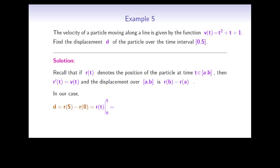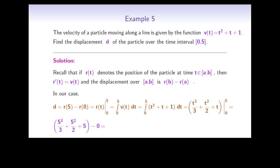This difference can be written using the vertical bar notation. By the fundamental theorem, since r(t) is an antiderivative of the velocity, d equals the integral from 0 to 5 of t² + t + 1 dt. An antiderivative is t³/3 + t²/2 + t, evaluated from 0 to 5. Plugging in the bounds gives 5³/3 + 5²/2 + 5 minus 0, which equals 355/6, or approximately 59.2.